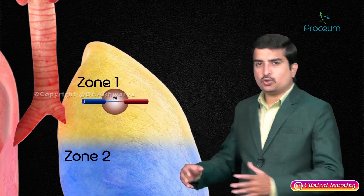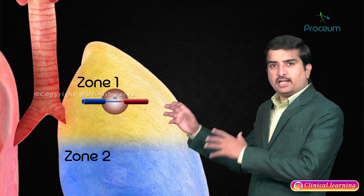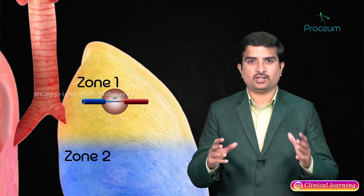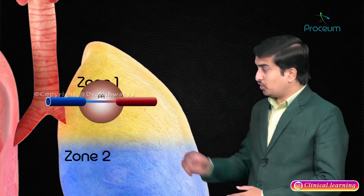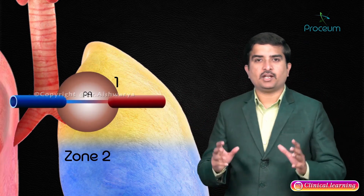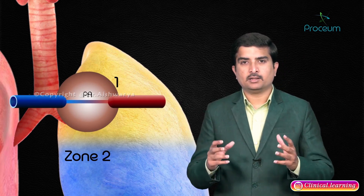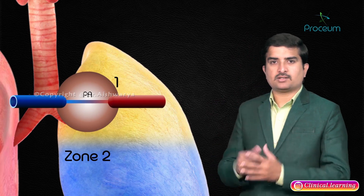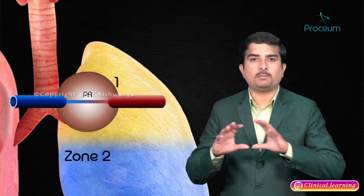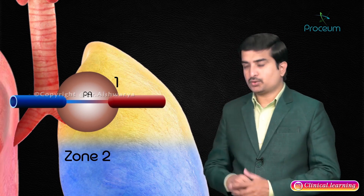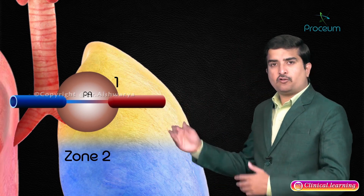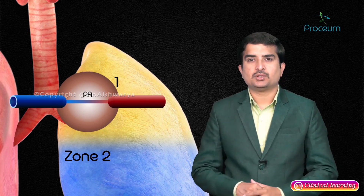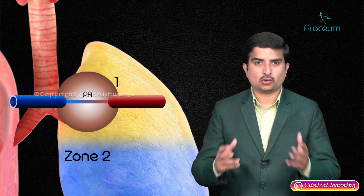Zone 1 is defined by areas in the lung where alveolar pressure exceeds the pulmonary arterial pressure. Zone 1 is not observed in the normal healthy human lung because pulmonary arterial pressure exceeds alveolar pressure in all parts of the lungs. Mainly due to the lack of perfusion that occurs in this zone, it quickly leads to tissue necrosis and lung damage.